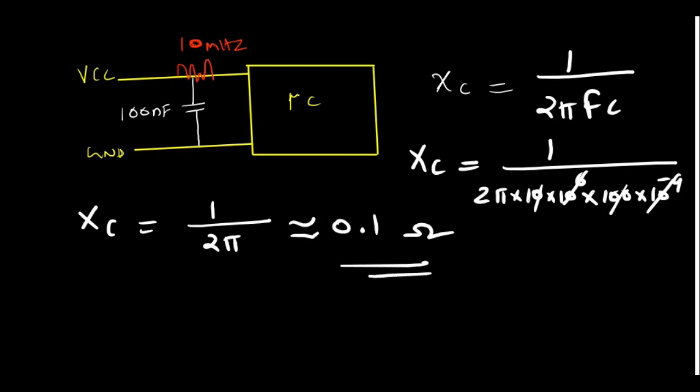See, that is very low impedance, almost like a short circuit for the transient or the noise content. So this is how this will bypass this noise to the ground. That is why it is known as a bypass capacitor.